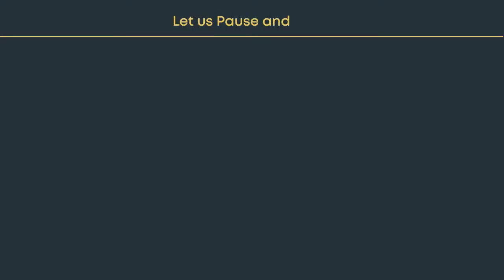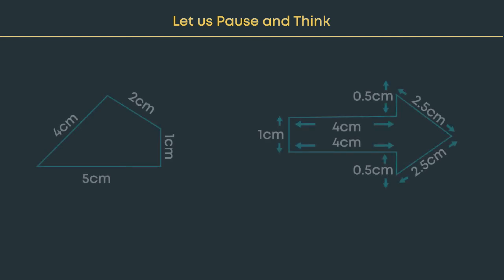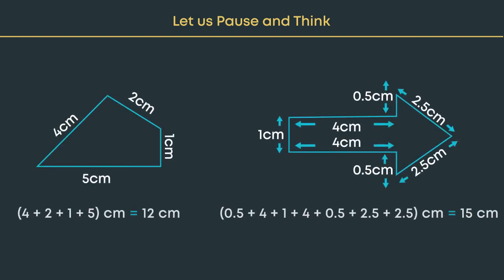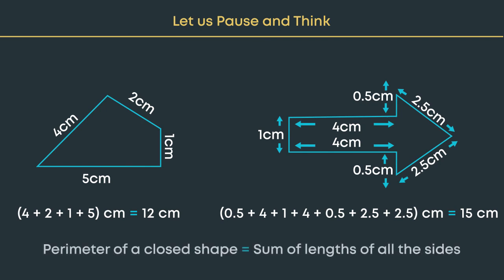Let us pause and think. What is the perimeter of any closed shape? It is the distance around the shape. So, if you know the length of each side, add them up to find the perimeter.